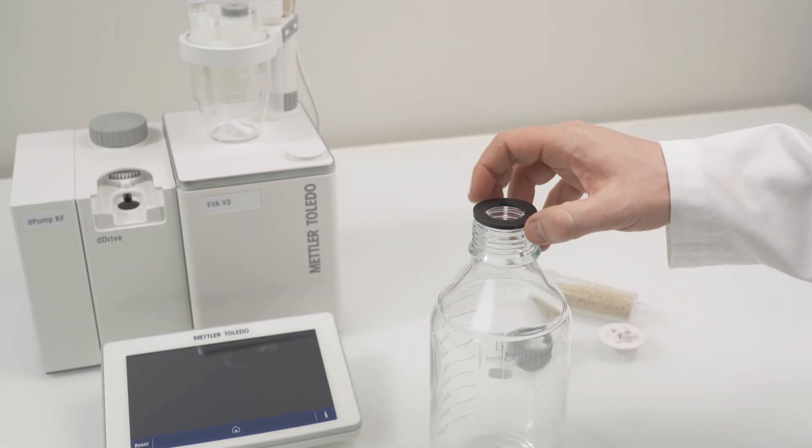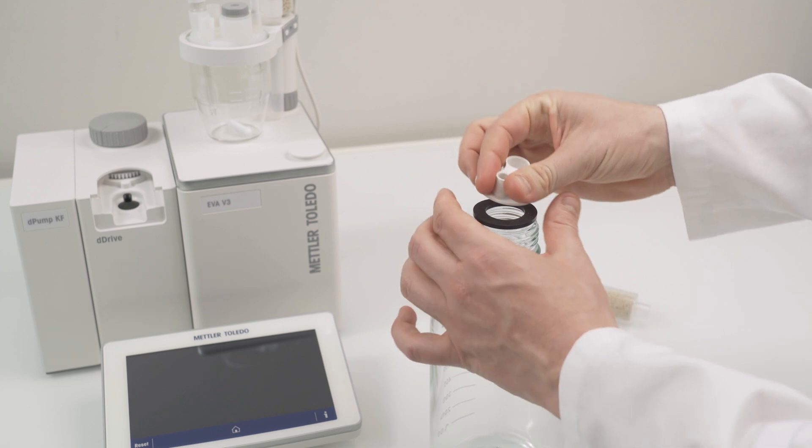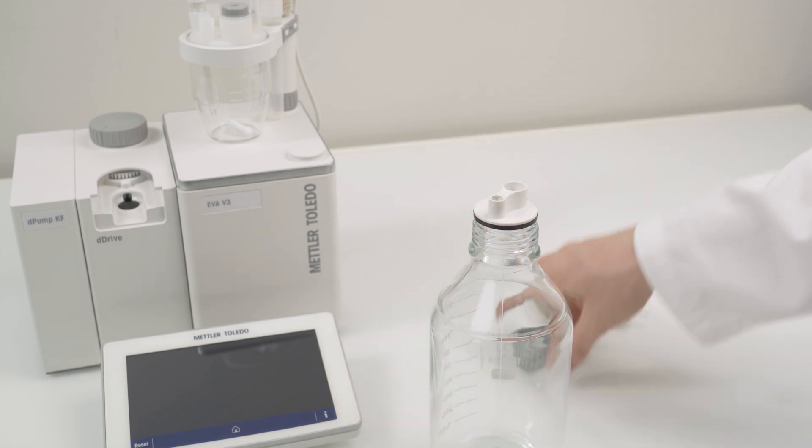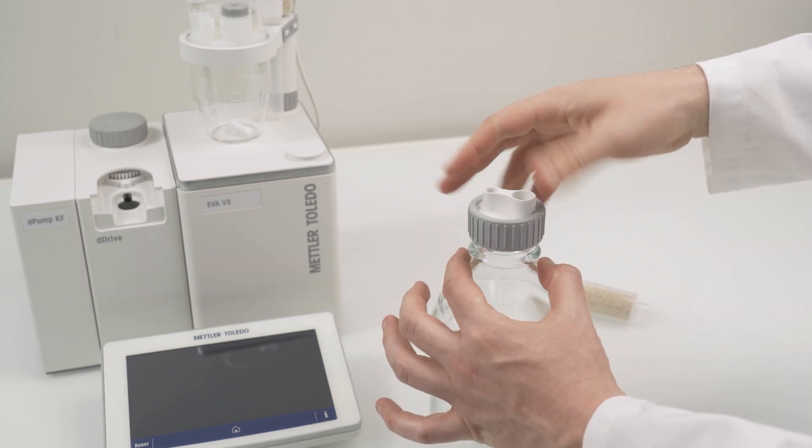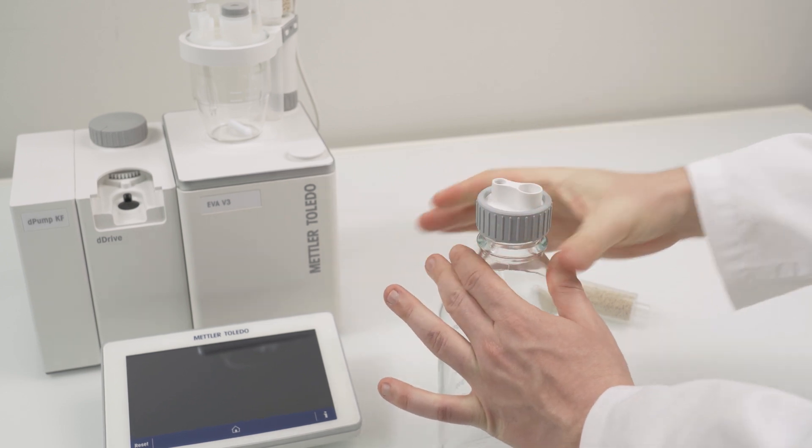Let's continue with the waste bottle of the D-Pump KF. Put the flat seal down onto the bottle, put the adapter on top and fix it with the nut. Connect the drying tube to protect the system against humidity.